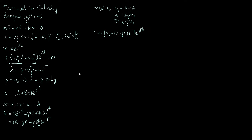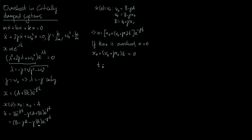Now let's think about what we need for overshoot to occur. If there is overshoot, then x must equal 0 at some point, because that's the definition — it crosses the equilibrium position at x = 0. Since the exponential term can never be zero, this implies x₀ + (v₀ + γx₀)t = 0 for some value of t, giving t = -x₀ / (v₀ + γx₀).